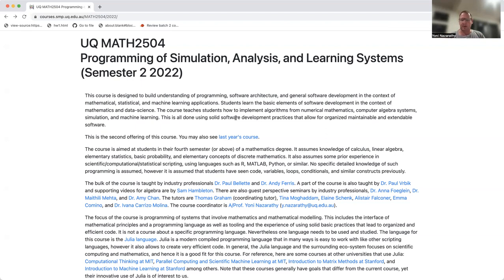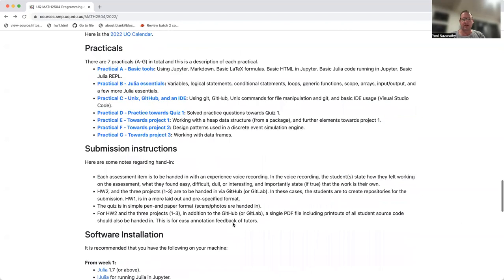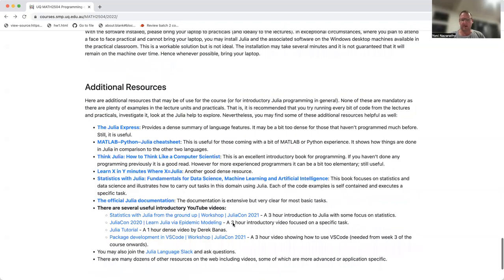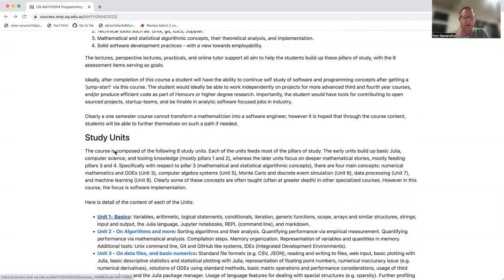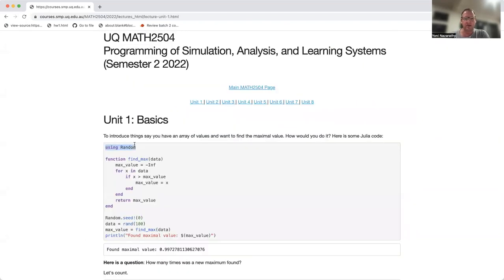And finally, what you can do is you can already preview the first couple of lectures because they're on YouTube. And the best thing that one can do in a lecture, and our lecturers will do this. They're pros. So if you go here, for example, to unit one, first lecture. Using random, with a capital R, by the way. Function, find, underscore, max, data, max, underscore, value, space, equal, space, negative, inf.